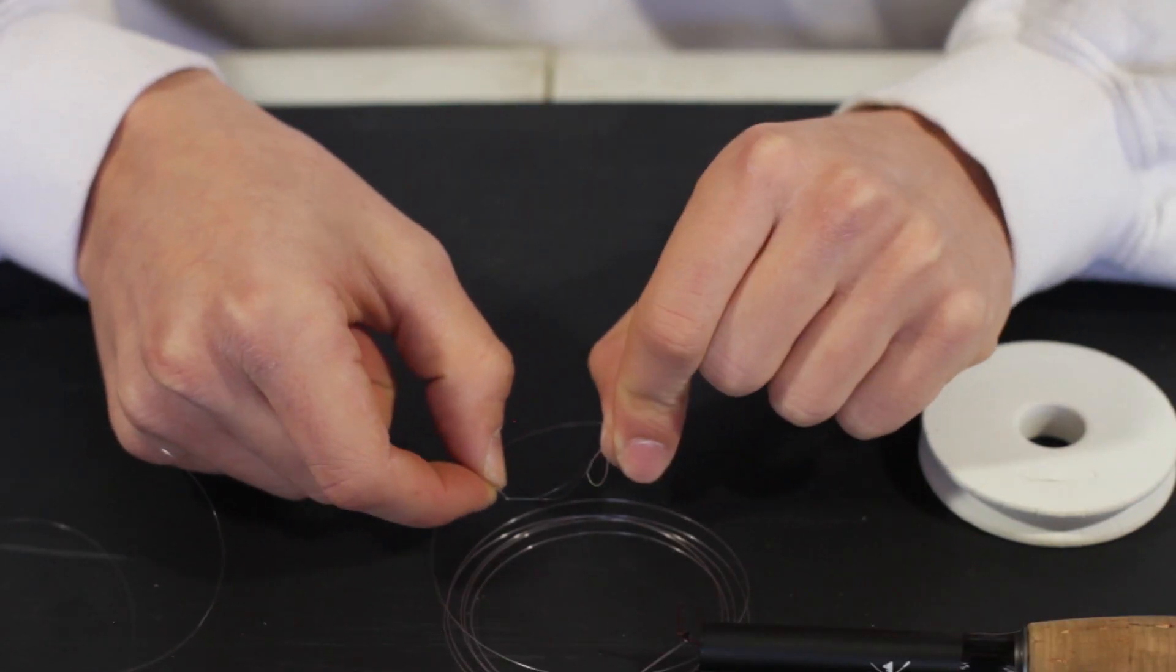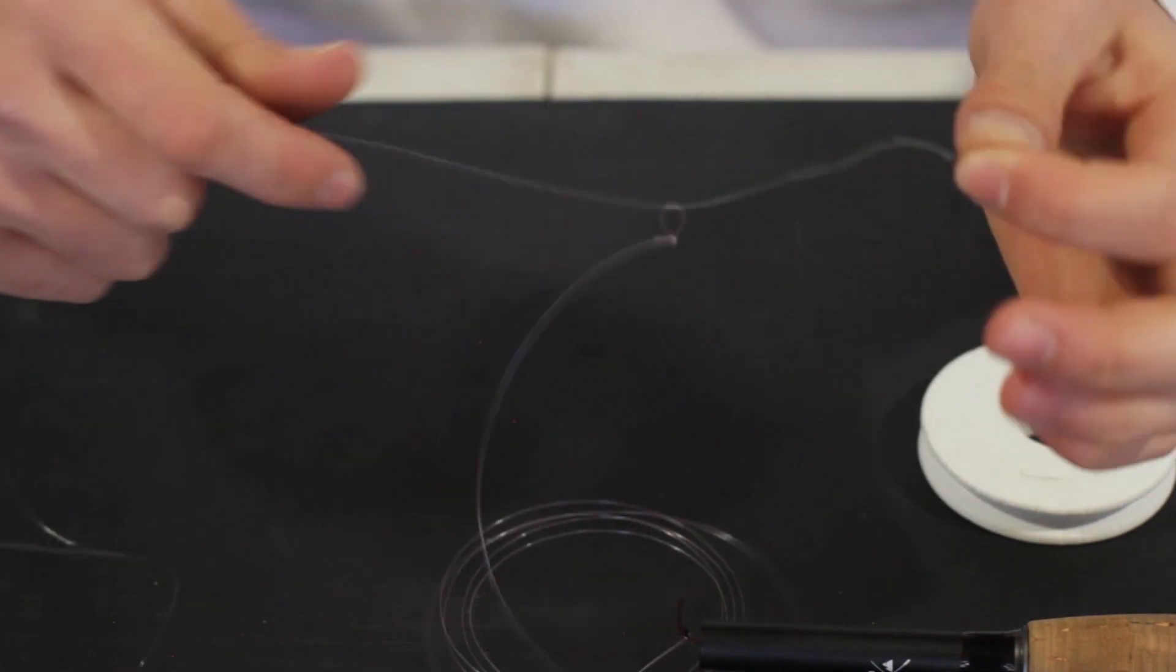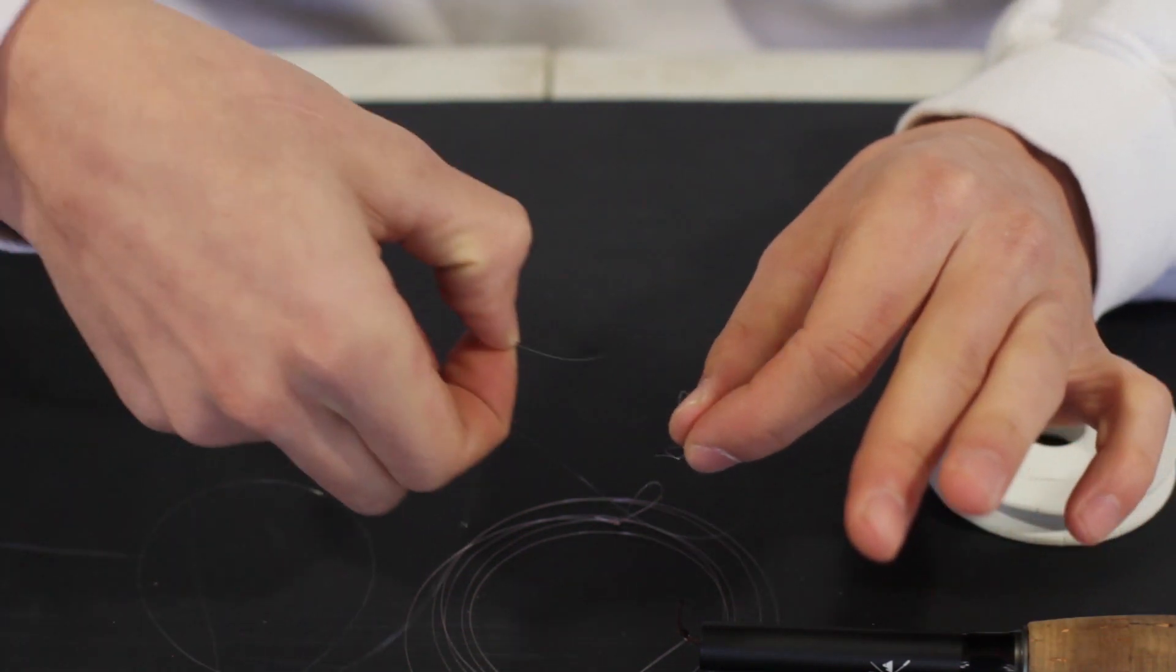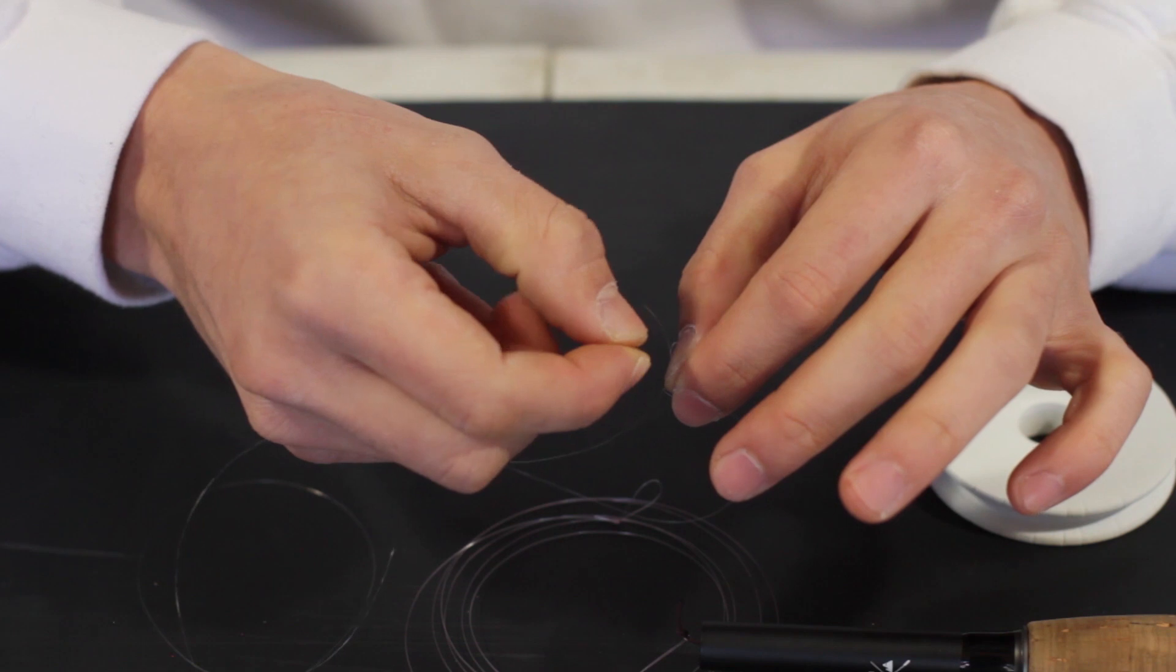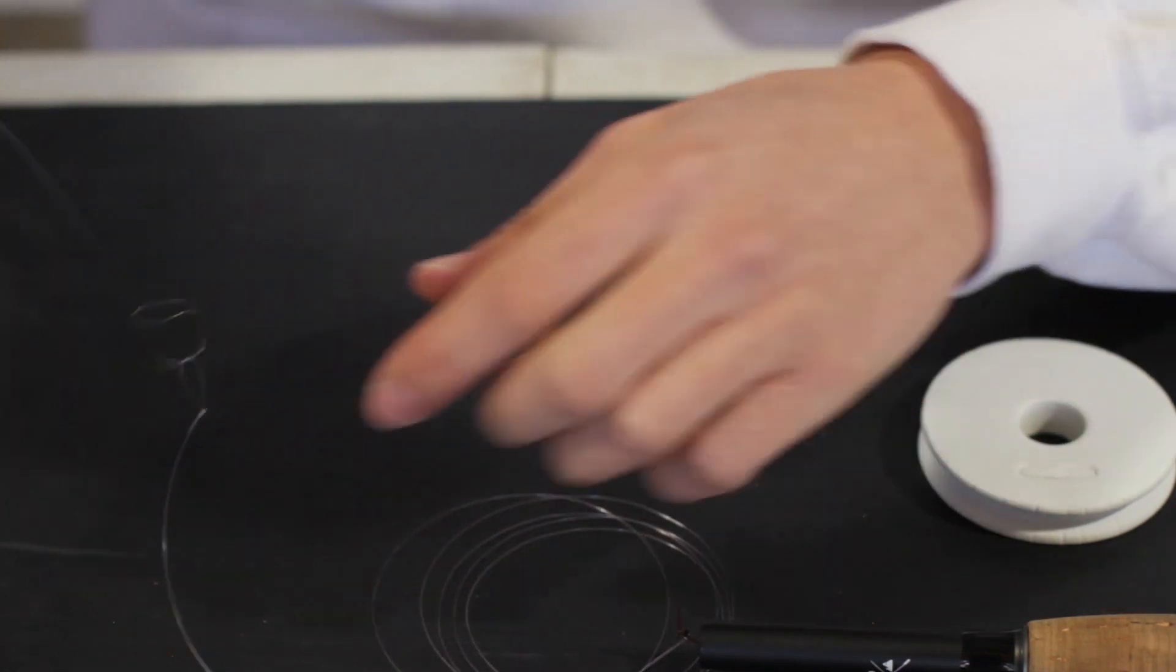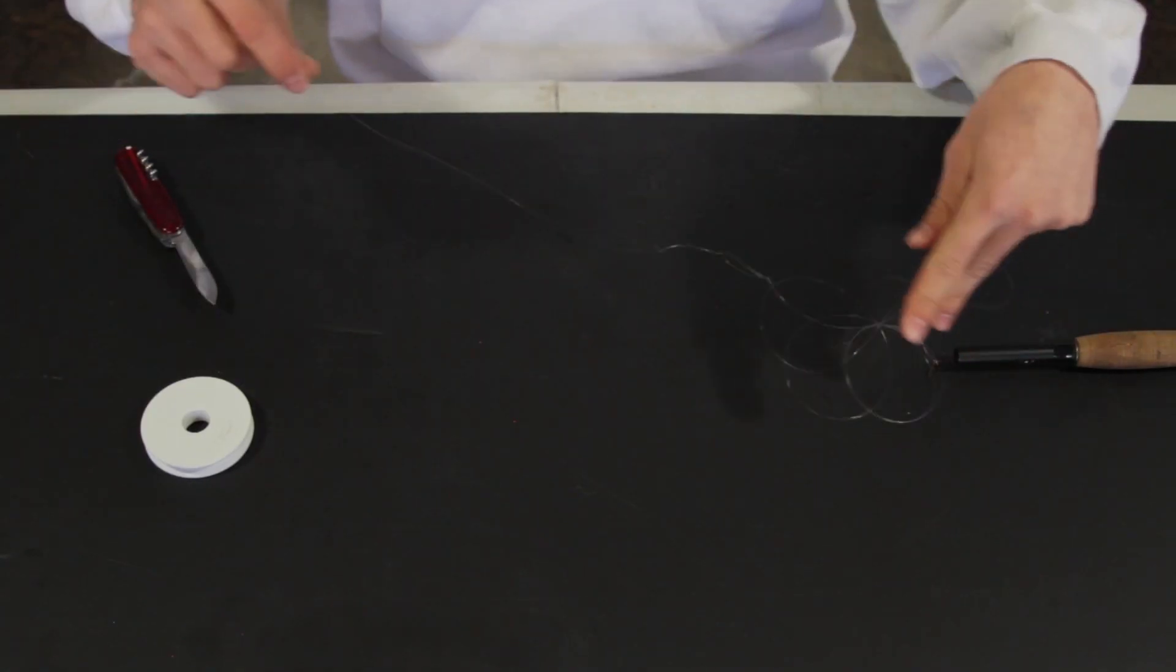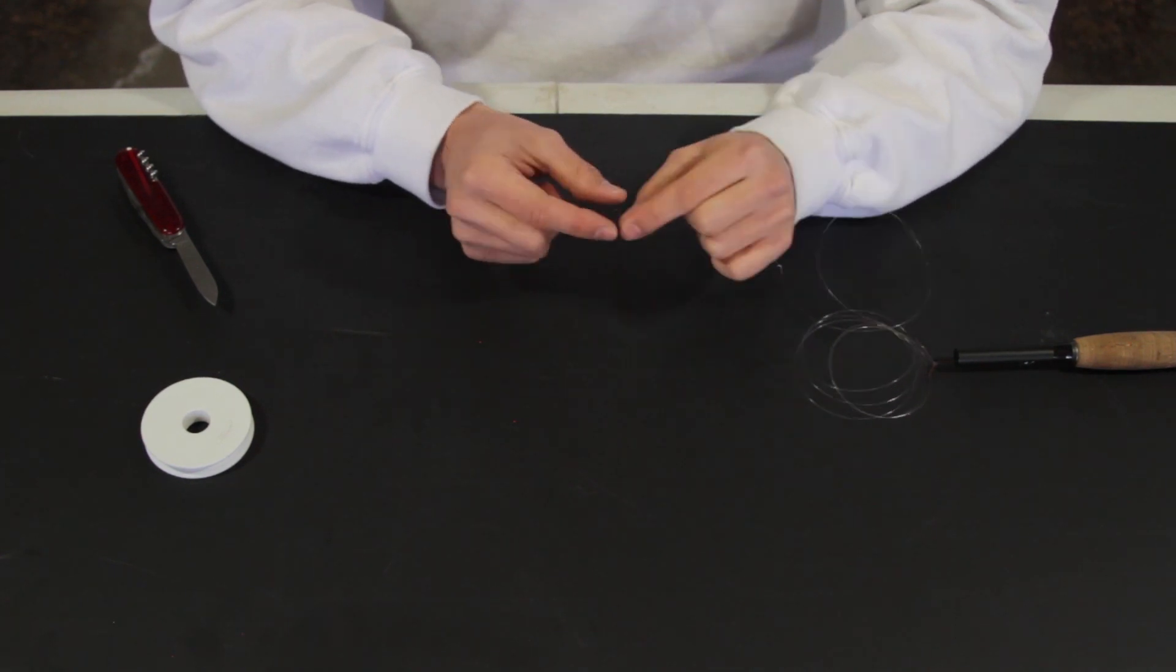So I'm going to take our tippet, send it through. So now that's on there like that. Grab the end of the tippet and send it through its own loop. Just like that. And just pull it straight.